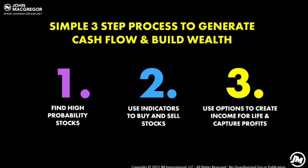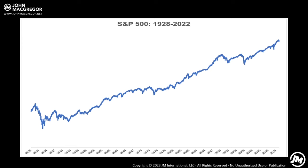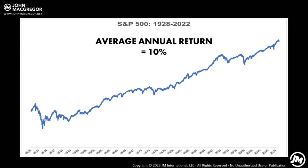The gist behind this strategy is based on this fact. This is a chart of the S&P 500 — a representation of the performance of the overall stock market going back to 1928. On average, the market has produced an average return of 10% over time. That doesn't mean 10% every year — it's up 15% one year, down 3% the next, up 18, down seven. But smoothed out over time, the market has generated approximately 0.83% per month.